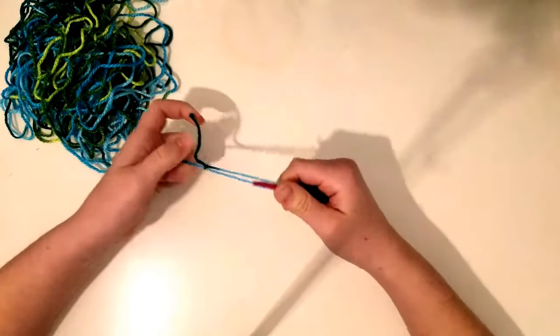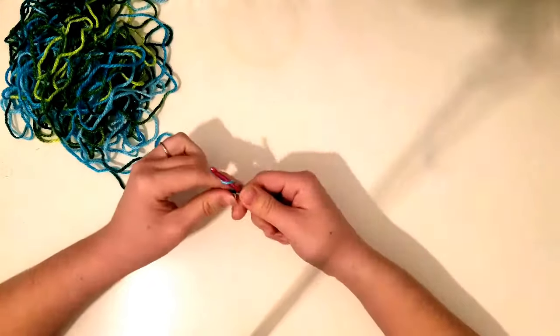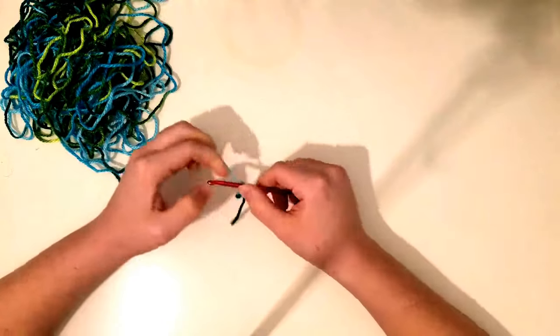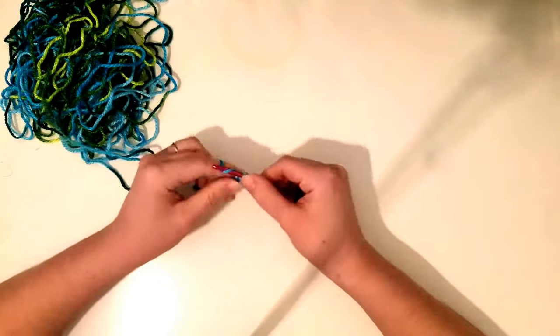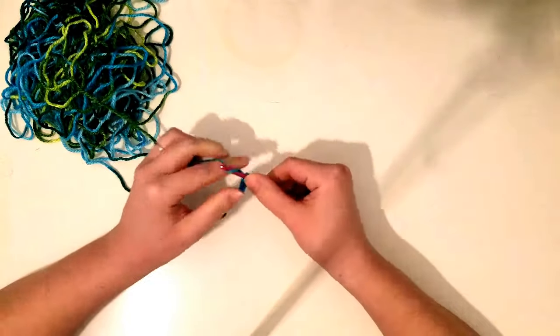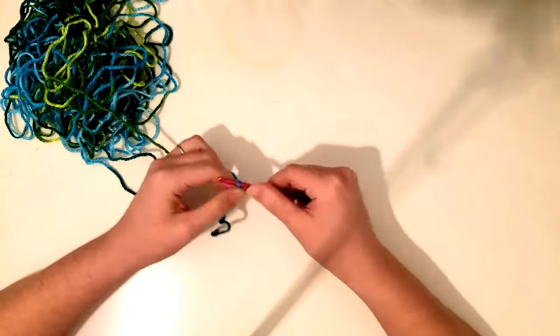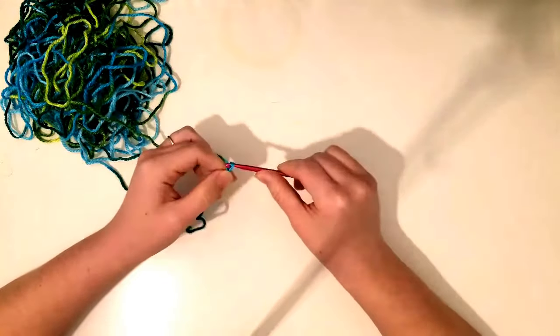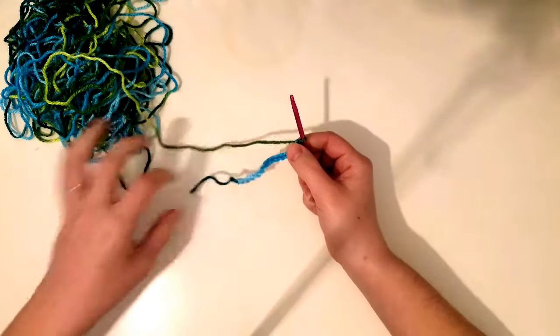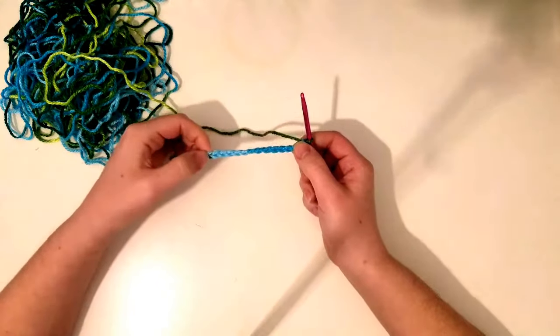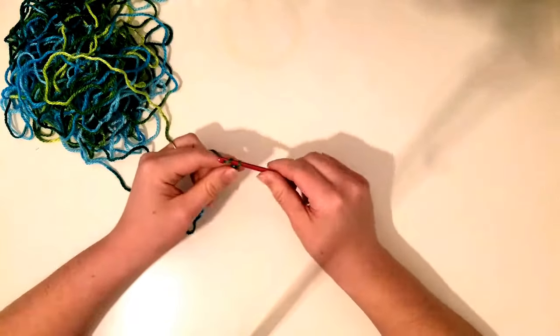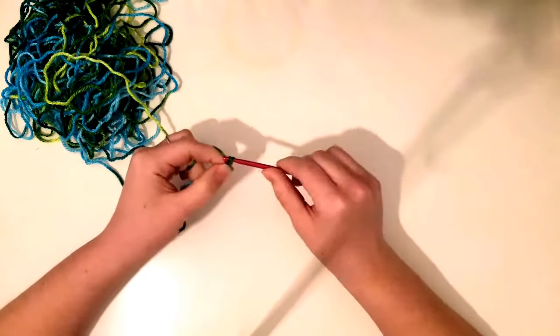So I'm going to make a slip knot and I'm going to chain 14. Two, three, four, five, six, seven, eight, nine, ten, eleven, twelve, thirteen, fourteen. And for basically, for your Celtic knot, you need multiples of 4 and an edge and an edge. So I'll go ahead and chain 2 more, making it 16 in total.